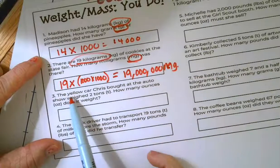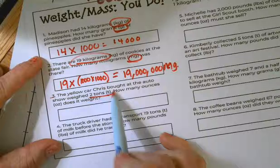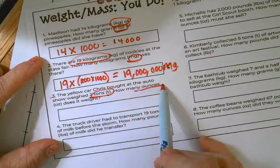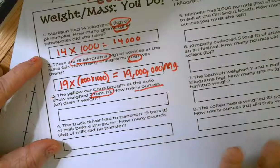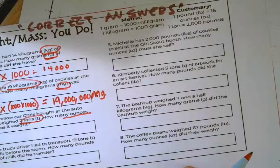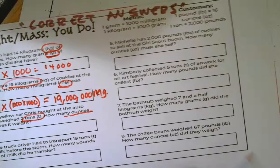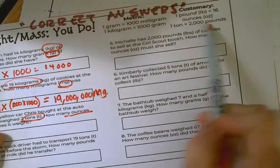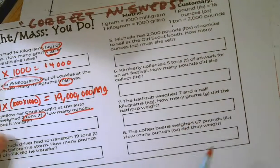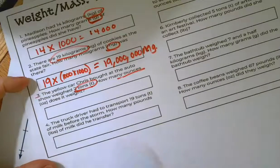All right. The yellow car. Number three. The yellow car Chris bought at the Auto Show weighed two tons. How many ounces does it weigh? This is another one. There is nothing in our equivalency chart that tells us how many ounces there are in a ton. But we do know that there are 2,000 pounds in a ton and there are 16 ounces in a pound. So we need to do those two steps to get what we're going to multiply by.